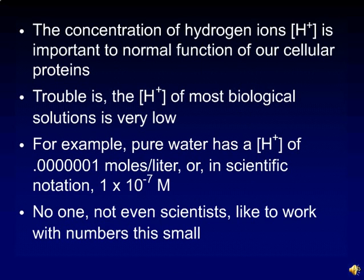Because the concentration of hydrogen ions is so important to the normal function of our cellular proteins, it's important we keep track of them. The trouble is, the hydrogen ion concentration of most biological solutions is very low. For example, pure water, which makes up most of our bodies, has a hydrogen ion concentration of 0.0000001 moles per liter, or in scientific notation, 1 times 10 to the minus 7th molar.